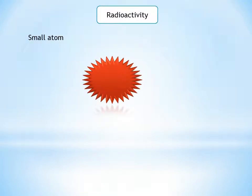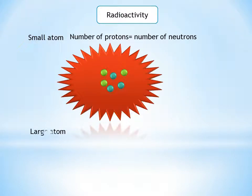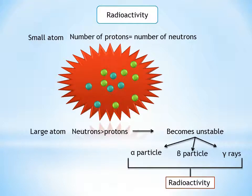Radioactivity. Small atoms have roughly equal numbers of protons and neutrons, whereas larger atoms tend to have more neutrons than protons. This makes them unstable and they may break up, releasing alpha or beta particles or gamma rays. This process is called radioactivity.